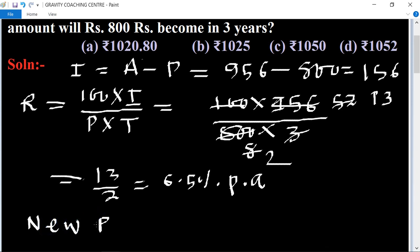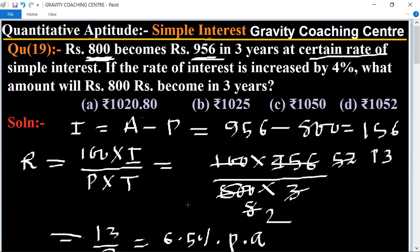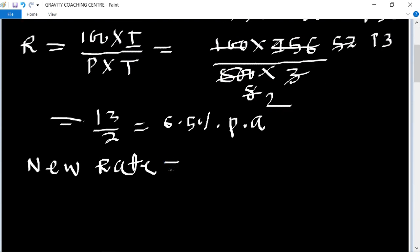Rate is increased by 4 percent, so new rate equal to 6.5 plus 4 equal to 10.5 percent per annum is the new rate.